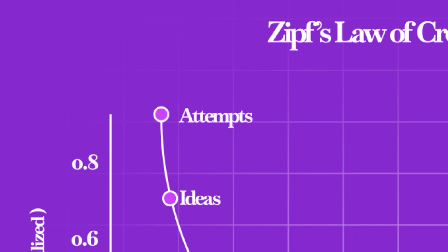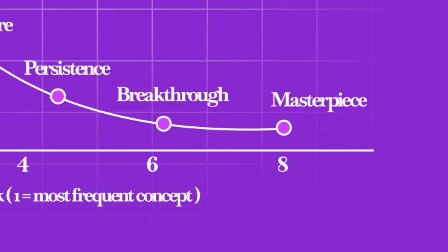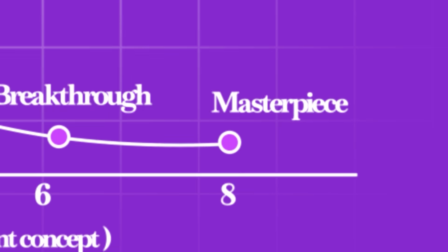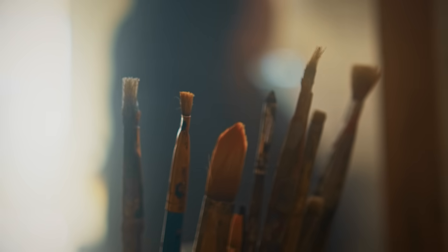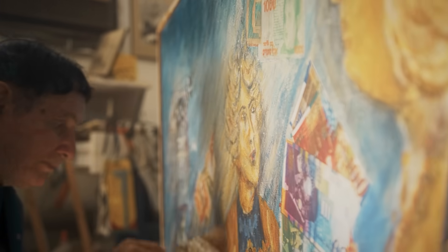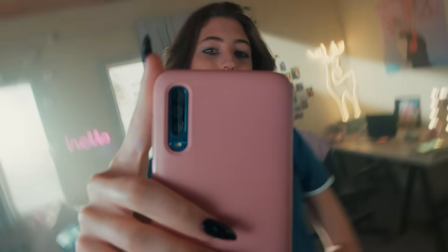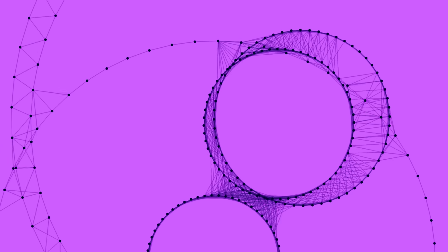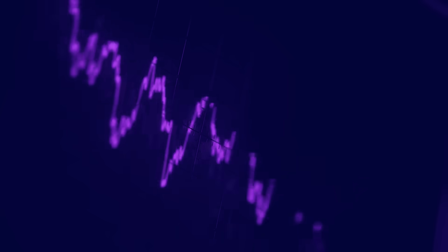A few things are extremely common, most are mediocre, and a tiny fraction are extraordinary. Apply this to creativity. Most of your ideas will be average, some will be pretty good, and a rare few will be brilliant. That curve shows up everywhere. Hit songs, best-selling books, viral TikToks. Mathematically, most creativity is noise, but the signal is in the outliers.